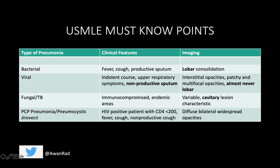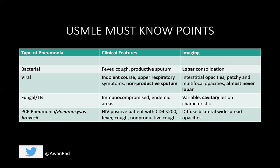In summary, for USMLE must-know points: in bacterial pneumonia, think fever, cough, and productive sputum — that's the key — and typically lobar consolidation confined to one lobe of the lung. You can also have bronchopneumonia that involves multiple lobes, but characteristically the consolidation involves one lobe. Viral pneumonia or atypical pneumonia typically has an indolent course, known as walking pneumonia. You may have upper respiratory symptoms like a runny nose or sore throat, nonproductive sputum, and interstitial or patchy multifocal opacities. Viral pneumonia almost never involves just one lobe of the lung — that's a key feature that helps differentiate viral and bacterial. If you can read the chest X-ray well, you may not even need to rely on all the clinical vignette details.